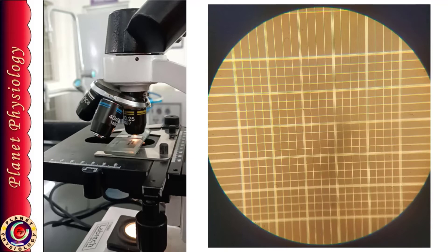So high power objective is either 40x or 45x depending upon your microscope. Many students find focusing under high power very tough because the common mistake they do is that they move the chamber away from the objective lens and then shift to the high power.